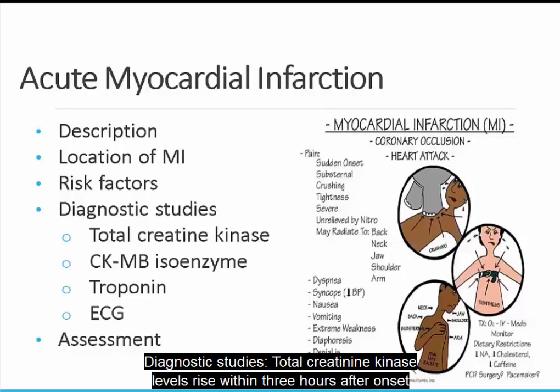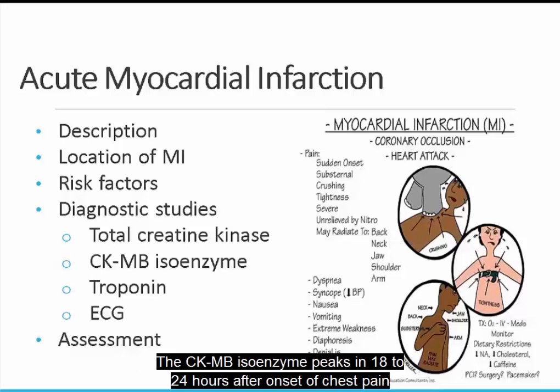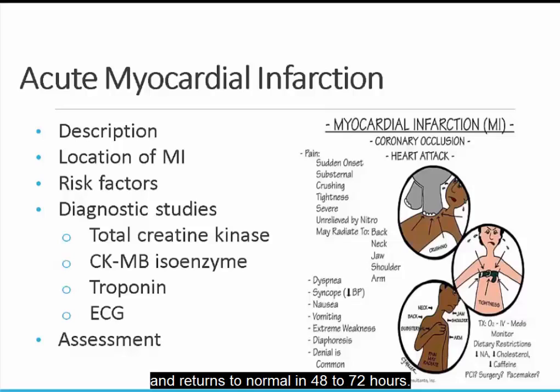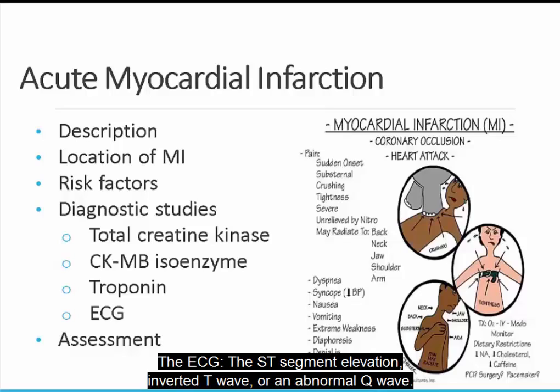Diagnostic studies: total creatinine kinase levels rise within 3 hours after onset of chest pain and peak at 24 hours after damage. The CKMB isoenzyme peaks in 18 to 24 hours after onset of chest pain and returns to normal in 48 to 72 hours. Troponin levels rise within 3 hours and will be evaluated for several days after the MI. On ECG: ST segment elevation, inverted T wave, or an abnormal Q wave.